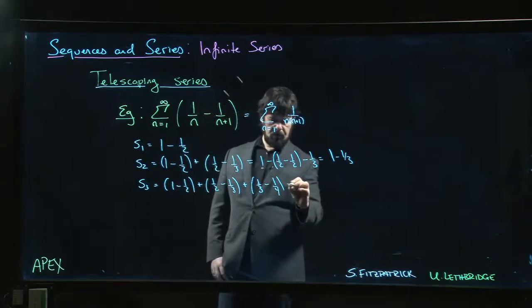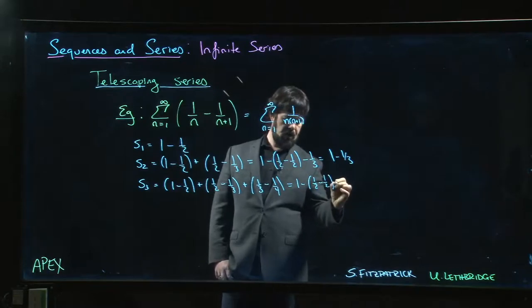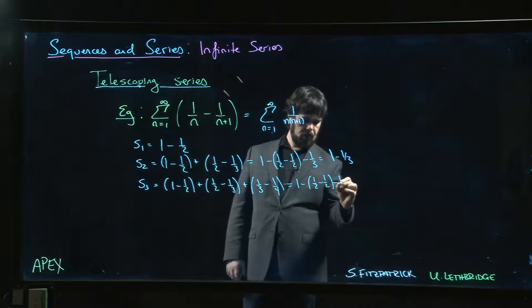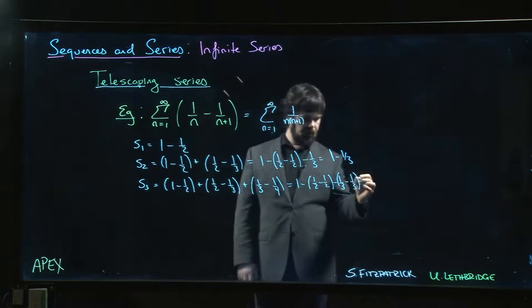Here we can regroup this as 1 half minus 1 half, and then 1 third minus 1 third, and then minus 1 quarter.